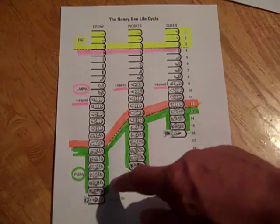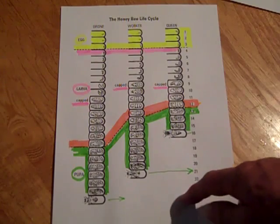It varies a little bit for drone and queen, but the worker bee is the general population of the hive.